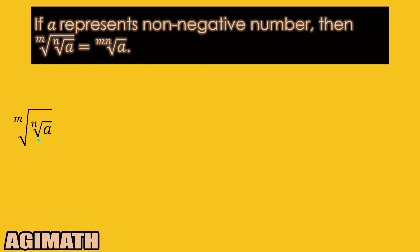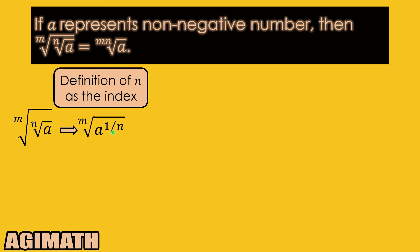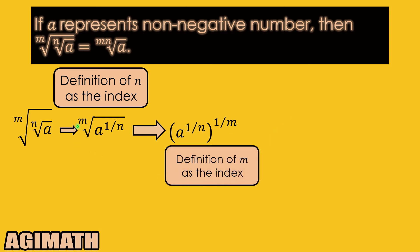Starting with the given — the mth root of the nth root of a — the technique is to transform this into exponential form. The nth root of a raised to the power of 1 over n applies the definition of n as the index, changing that into exponential form with exponent 1 over n. Since we still have one radical sign, we transform it further: since the index is m, the rational exponent becomes 1 over m, applying the definition of m as the index to get the full exponential form.